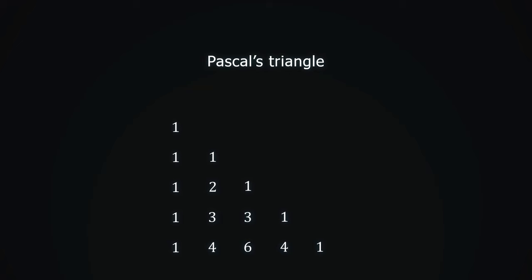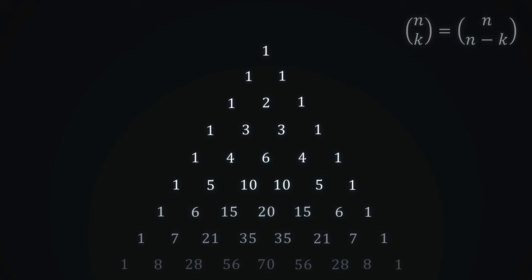Usually, we shift the rows so that they are aligned. We can see that the triangle is symmetric because of the symmetry identity. Now Pascal's identity is even clearer. Any number is equal to the sum of the numbers directly above him.